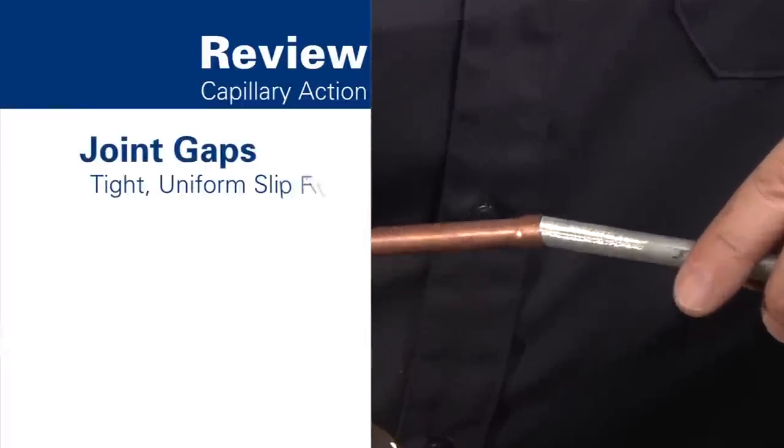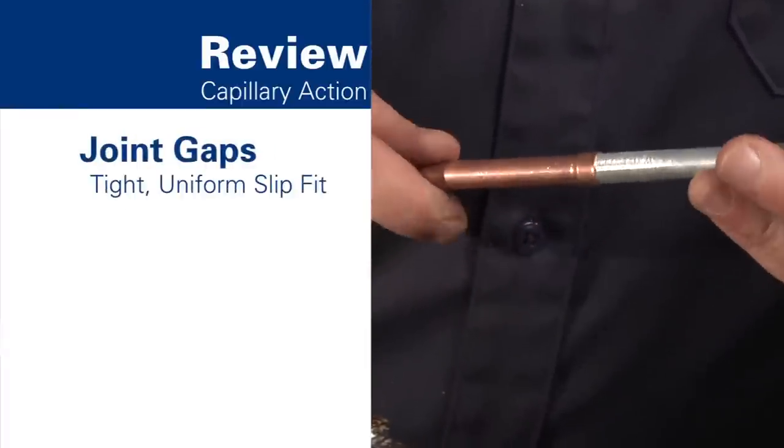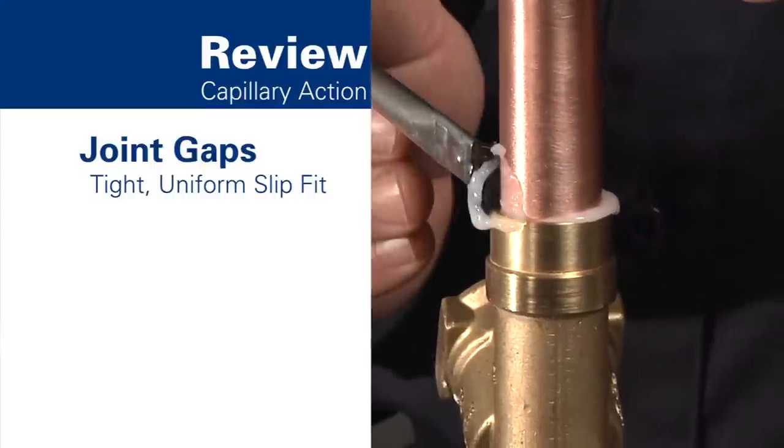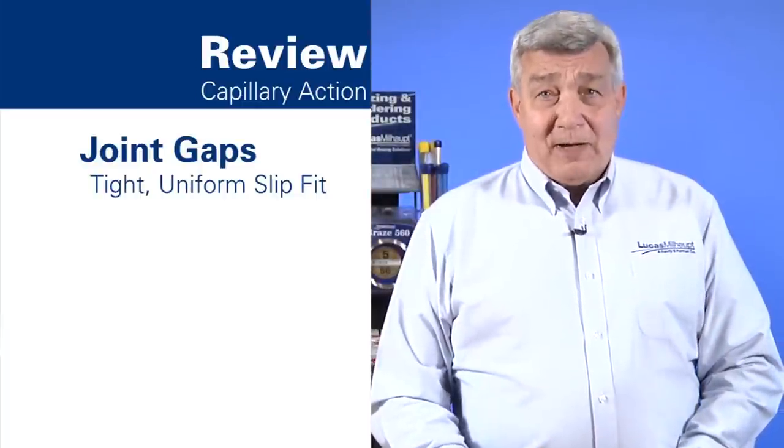From these illustrations, we can understand several principles relating to capillarity and brazing. First, joint gaps must be of correct uniform size for capillary action to occur. Variation in spacing will affect the success of your brazing operation, because capillarity will be compromised.